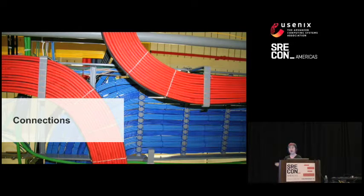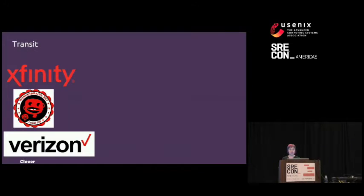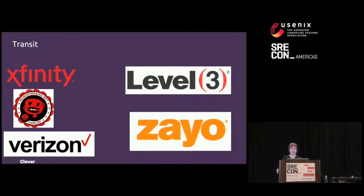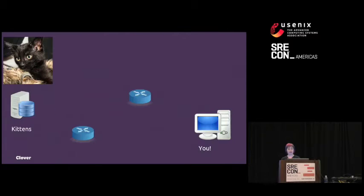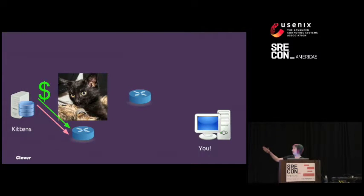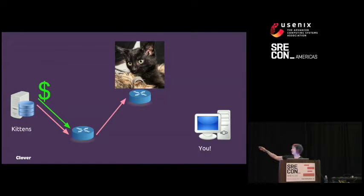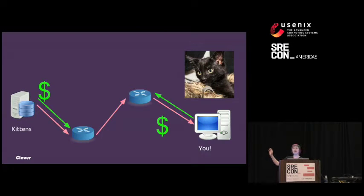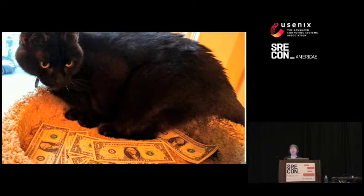The first way is something we call transit. Transit is like an internet service provider for your internet service provider. At your house, you might have Comcast or Monkey Brains or Verizon, and those internet service providers will have someone like Level 3 or Zayo. Transit providers are just your ISP for your ISP, which is pretty cool. But transit providers, being businesses themselves, also charge money. In the kitten picture example, the kitten server goes via their transit provider, which charges them money, goes to another transit provider, and then my home ISP also pays their transit provider money. So there are some costs for both providers.